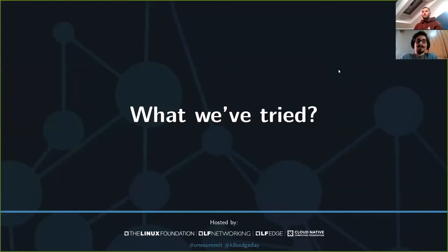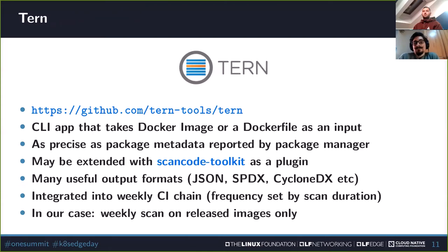As Krzysztof mentioned, first of all we need an SBOM, so we looked for a tool that would generate one. We found Tern, which could analyze Docker containers out of the box. It is a CLI app that takes a container image or a Dockerfile and generates an SBOM for it. It's pluggable and has upstream support for ScanCode Toolkit. On itself it supports only packages, but ScanCode Toolkit can be used to extend both package metadata and to scan files. Tern will be as precise as the metadata reported by the package managers it queries. Tern gave us the ability to easily show people what's in the containers they build and what licenses the components in those images have. That's why we integrated Tern into our weekly CI chain.